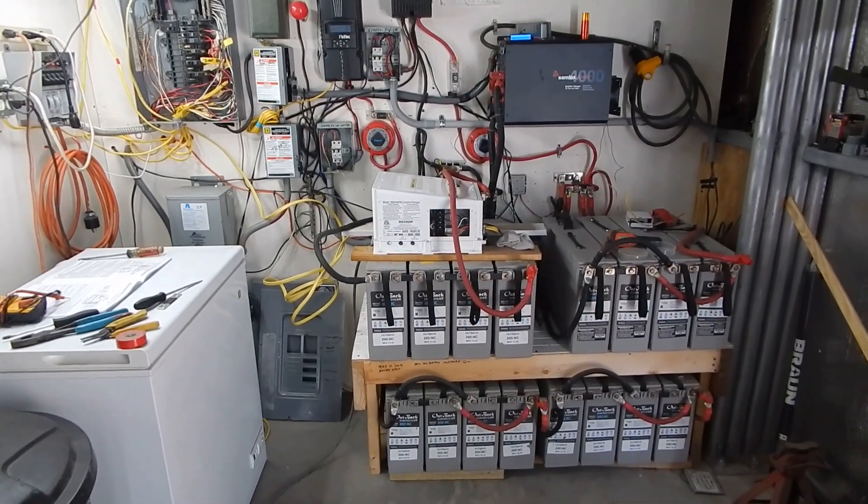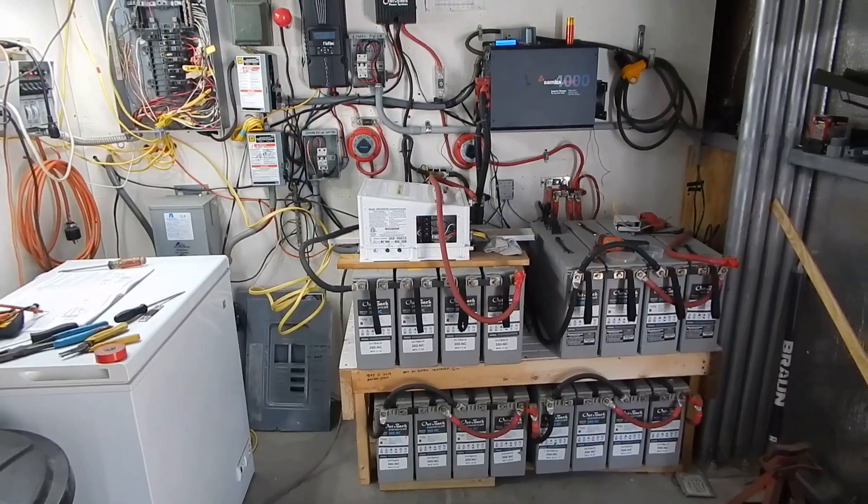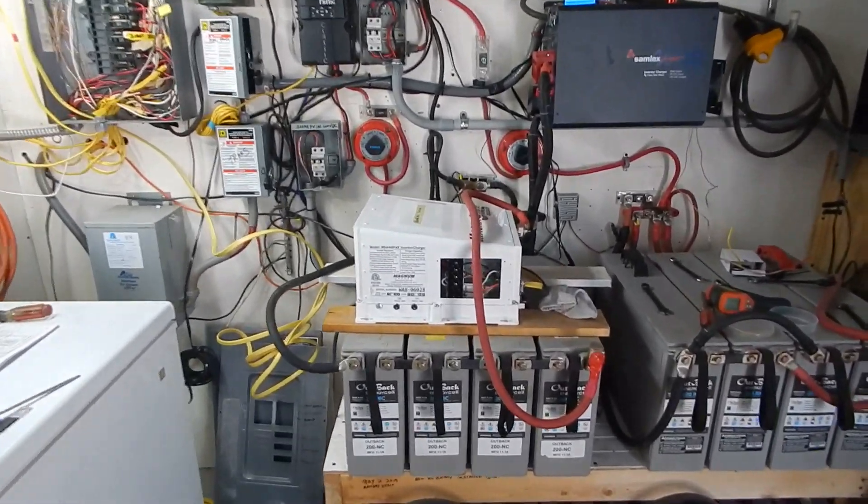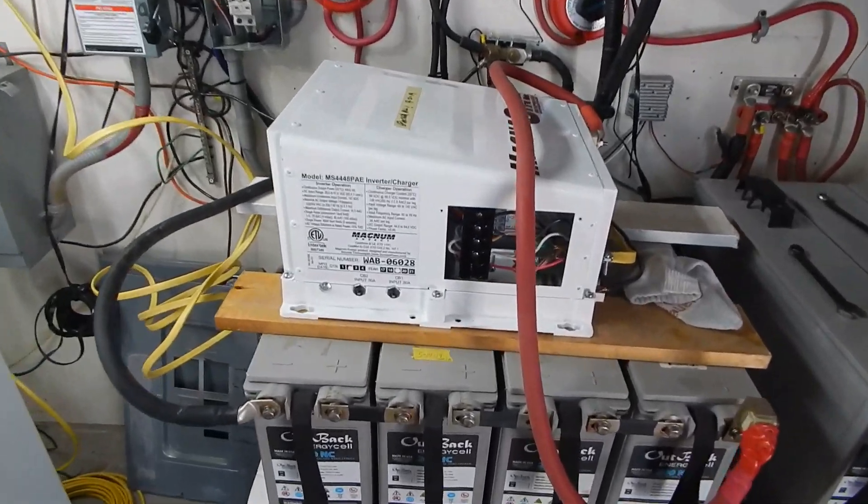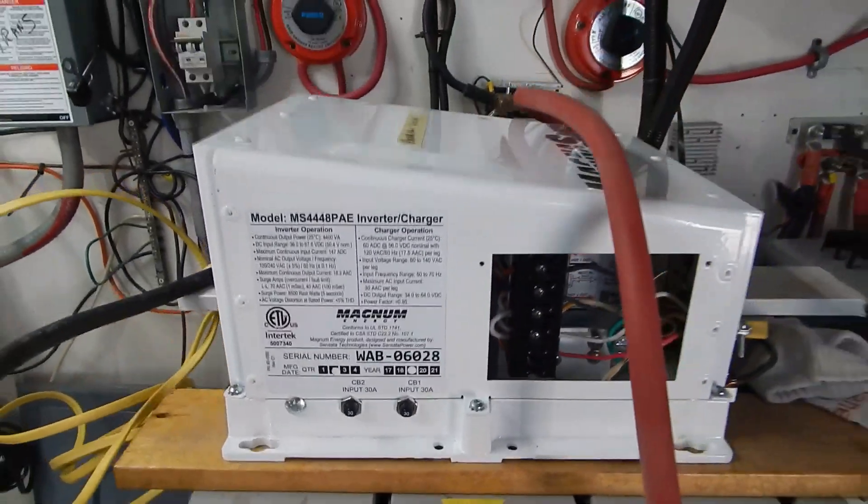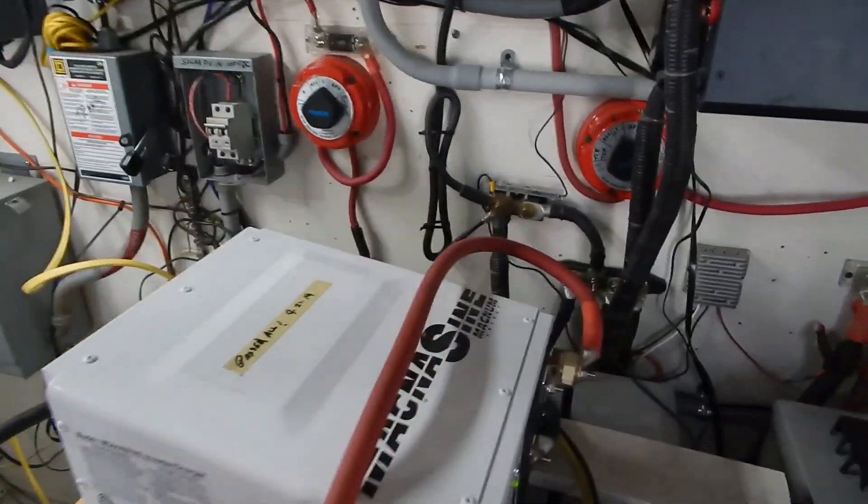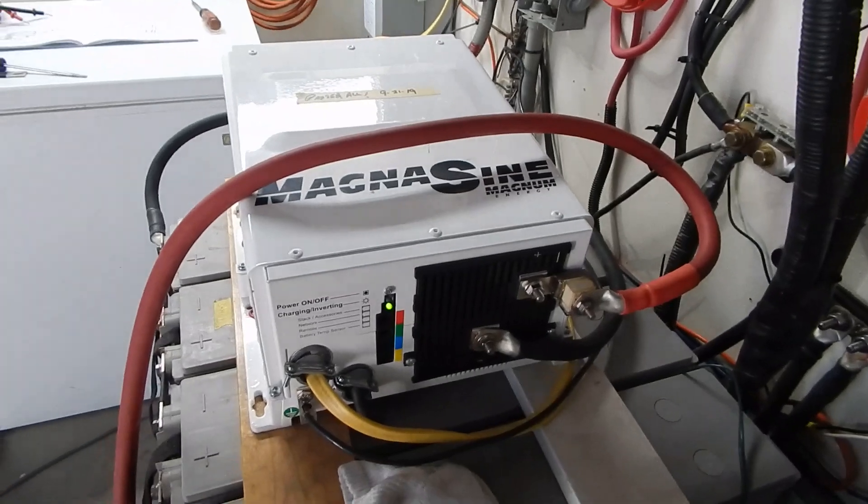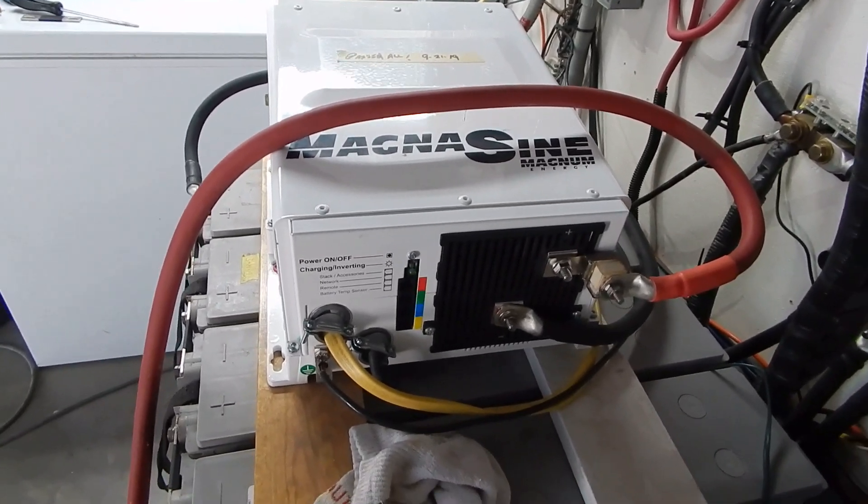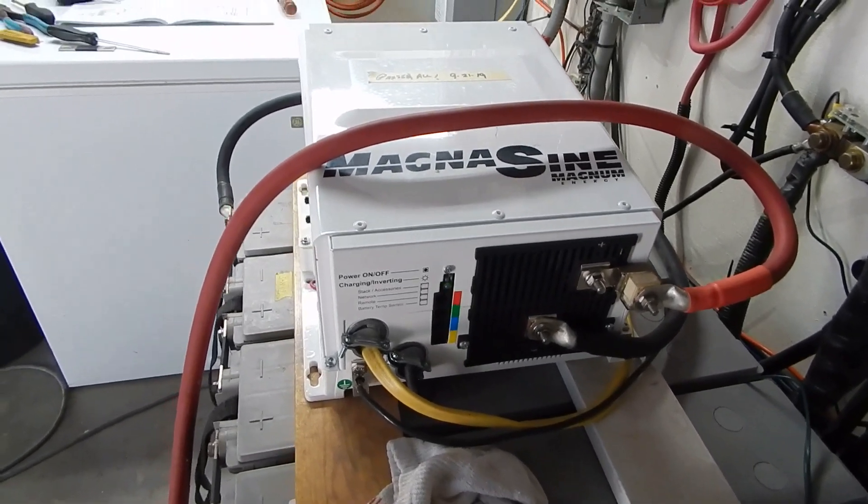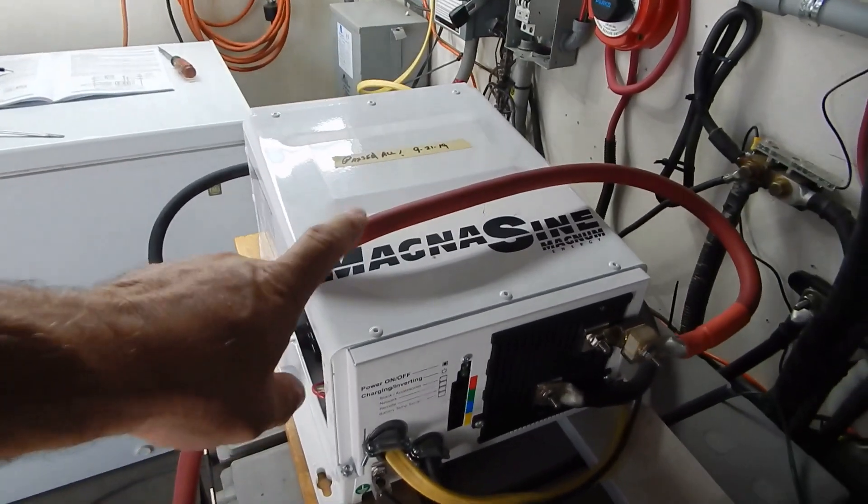Okay, today is Saturday, 9/21. I've just completed my test of the Magnum PAE 4448 and I got this unit from Boat and RV Accessories. I've purchased several items from this company. This is where my first Go Power inverter came from. They're on eBay and Amazon and you can get to them direct. So I ordered this unit.